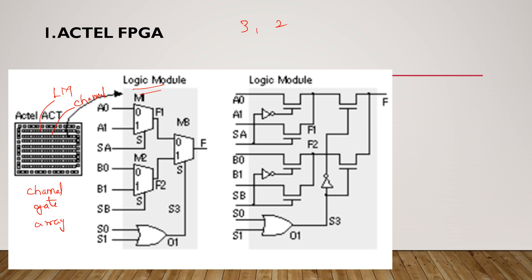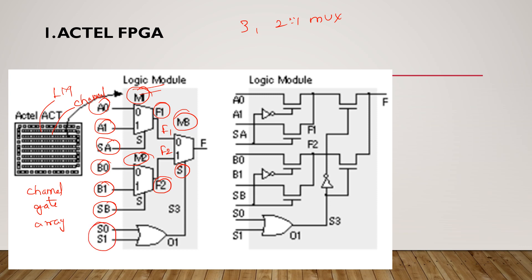Inside this logic module, we have three 2-to-1 MUXes: MUX1, MUX2, and MUX3. The first MUX has inputs A0 and A1 with select line SA, and output F1. The second multiplexer has inputs B0 and B1, select line SB, and output F2. The third multiplexer has inputs F1 and F2. The select line S is generated from inputs S0 and S1 through an OR gate, which produces control signal S3 (i.e., S). The final LM module produces output S.